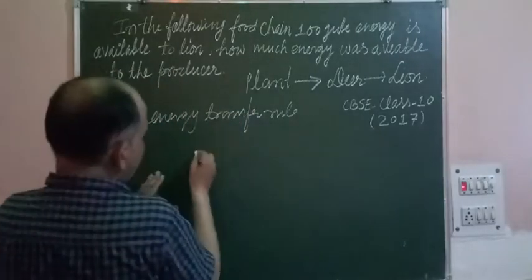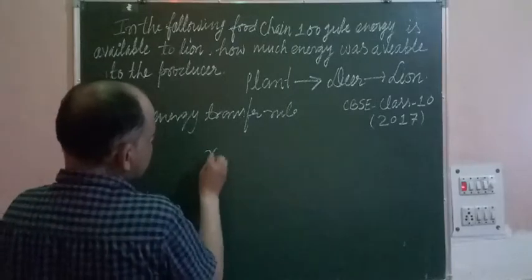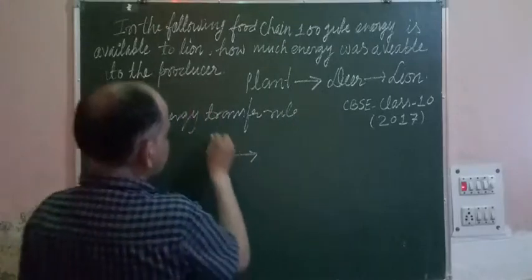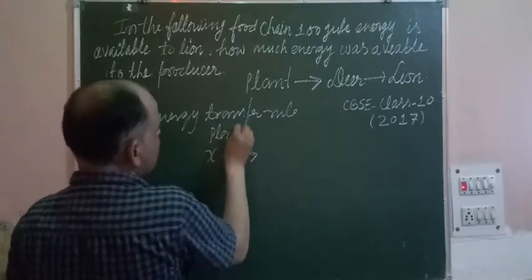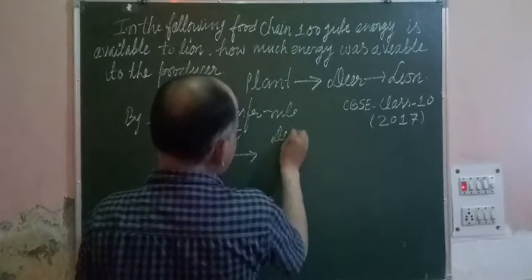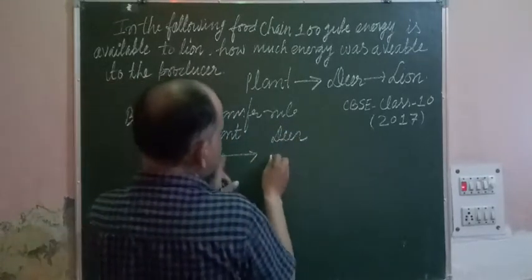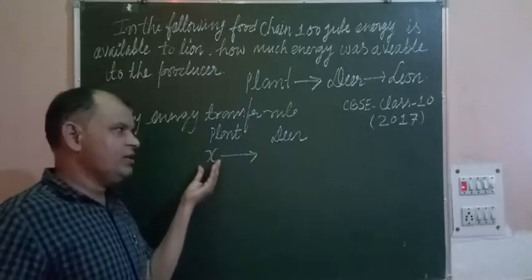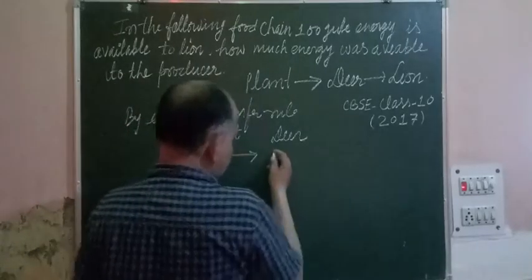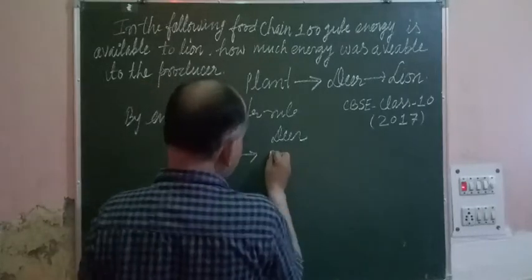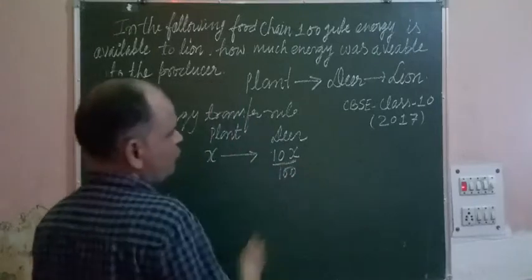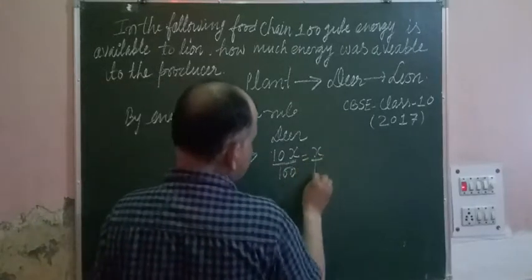So if plant produces X joule energy then it is transferred to deer. This is plant which is the producer. And deer is the first consumer. So if X joule energy transfers from plant to deer, then deer consumes only 10%, 10% of X or 10 over 100, which is X over 10.